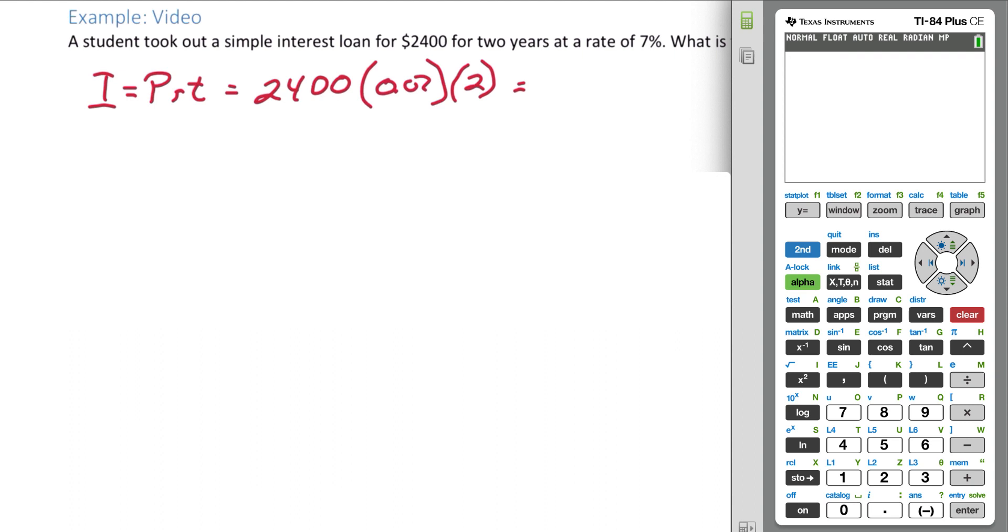In the calculator we have $2,400 times .07 times 2. The interest at the end of 2 years is $336.